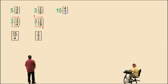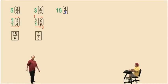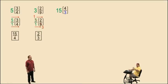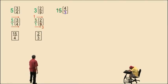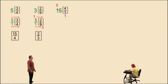Here we have fifteen times four-thirds. Charlie, can we kung fu this one? Yes, you can, because three divides evenly into fifteen. Fifteen divided by three is five. We can disregard that one, and five times four is twenty. Kung fu!